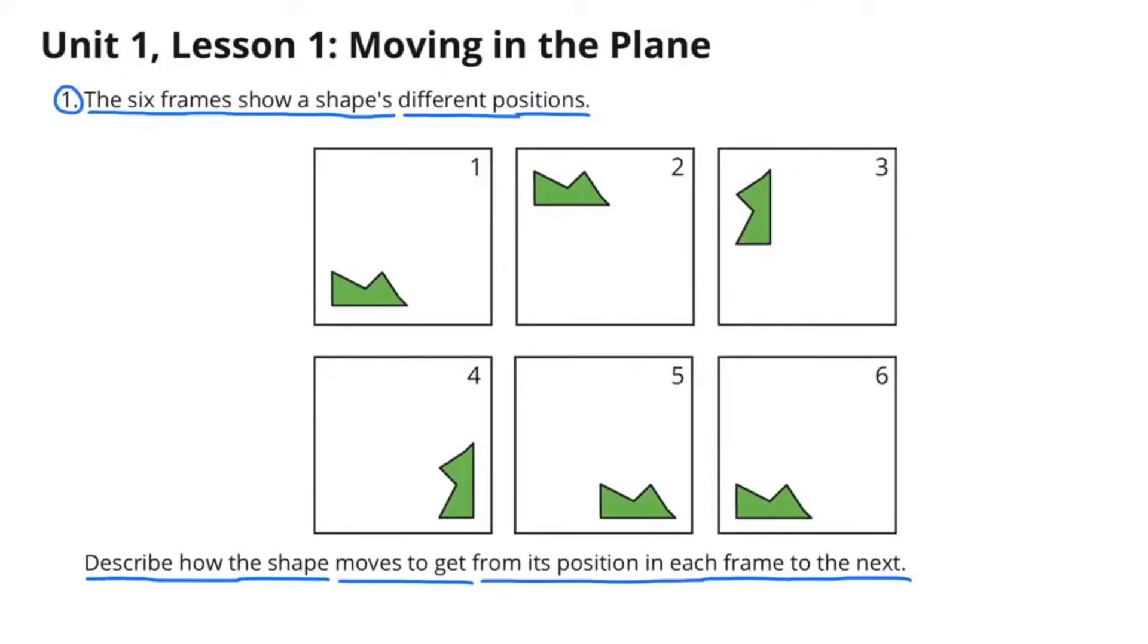Number 1. The six frames show a shape's different positions. Describe how the shape moves to get from its position in each frame to the next.